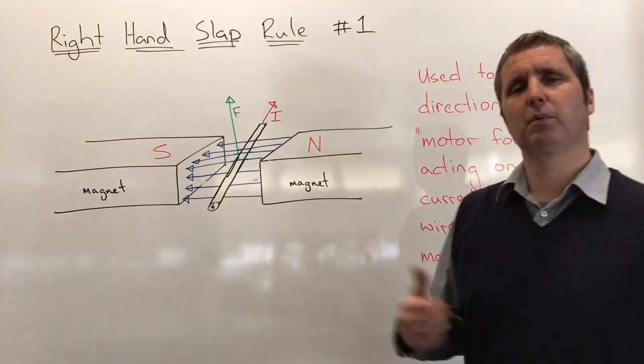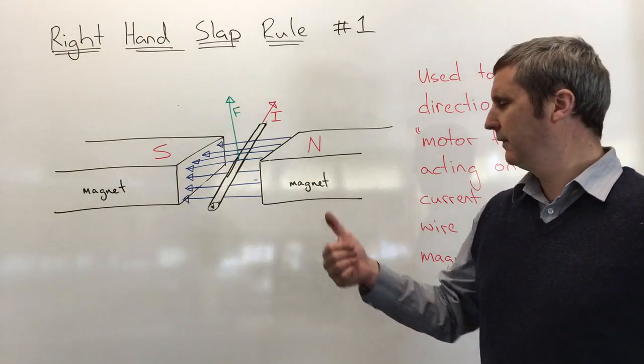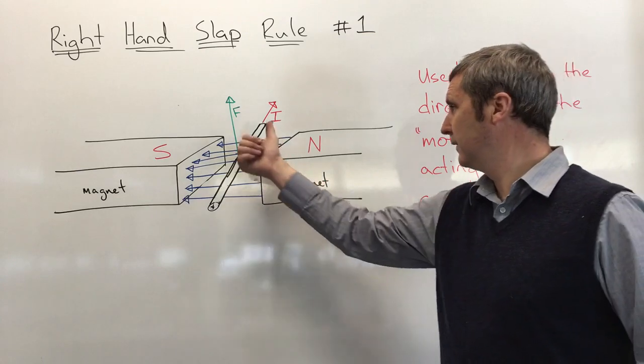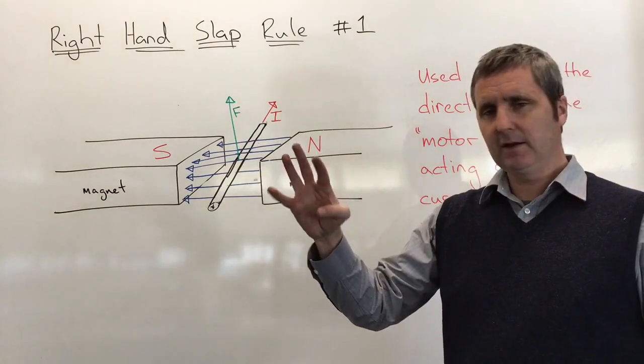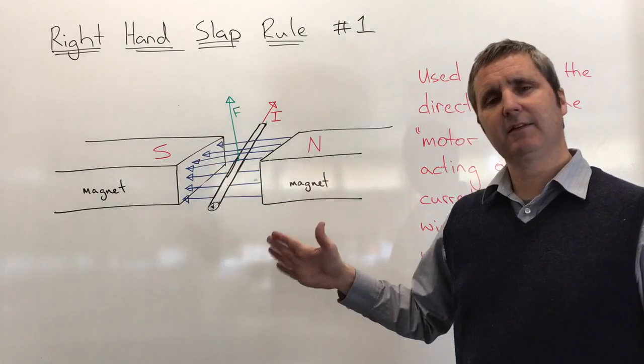The right-hand slap rule is pretty easy. It's similar to the right-hand grip rule - similar in that the thumb is still the current, and the fingers here are still the magnetic field lines.